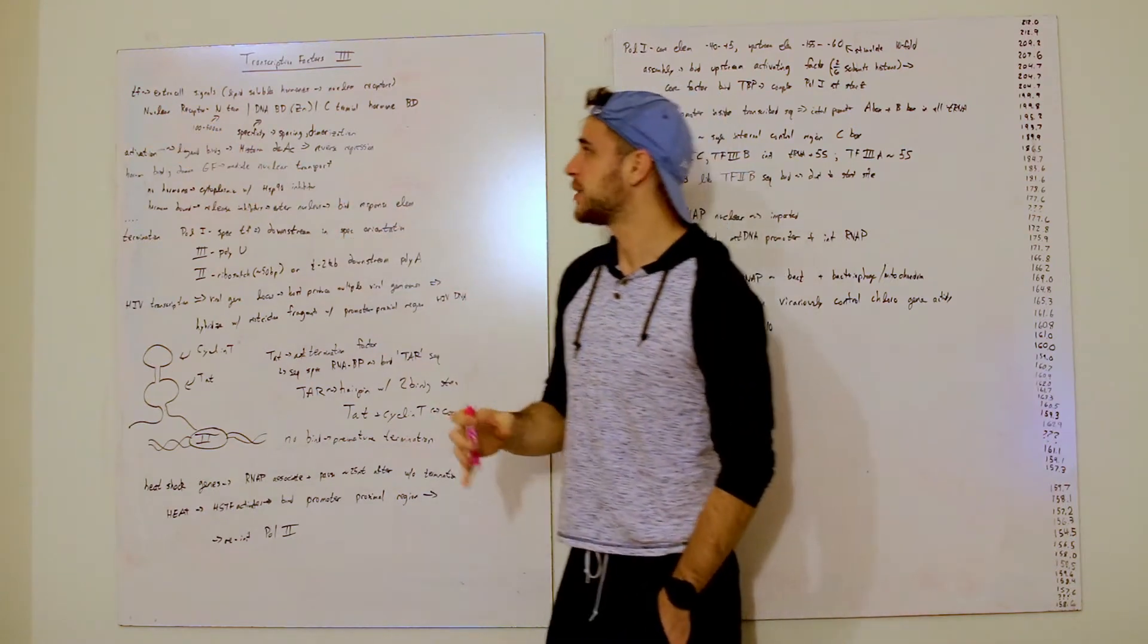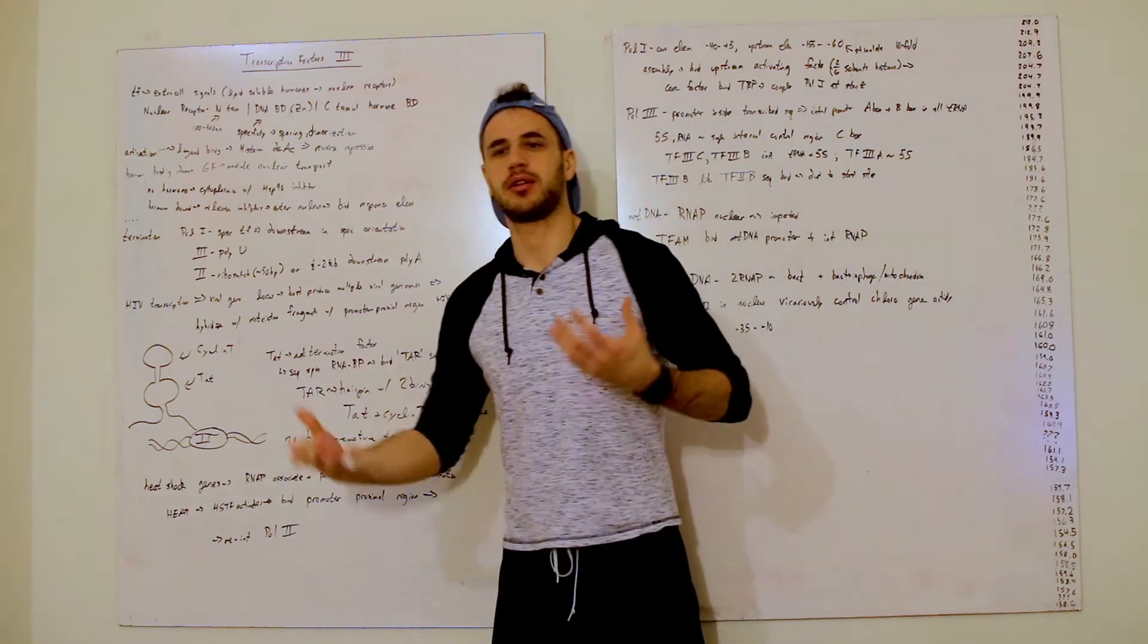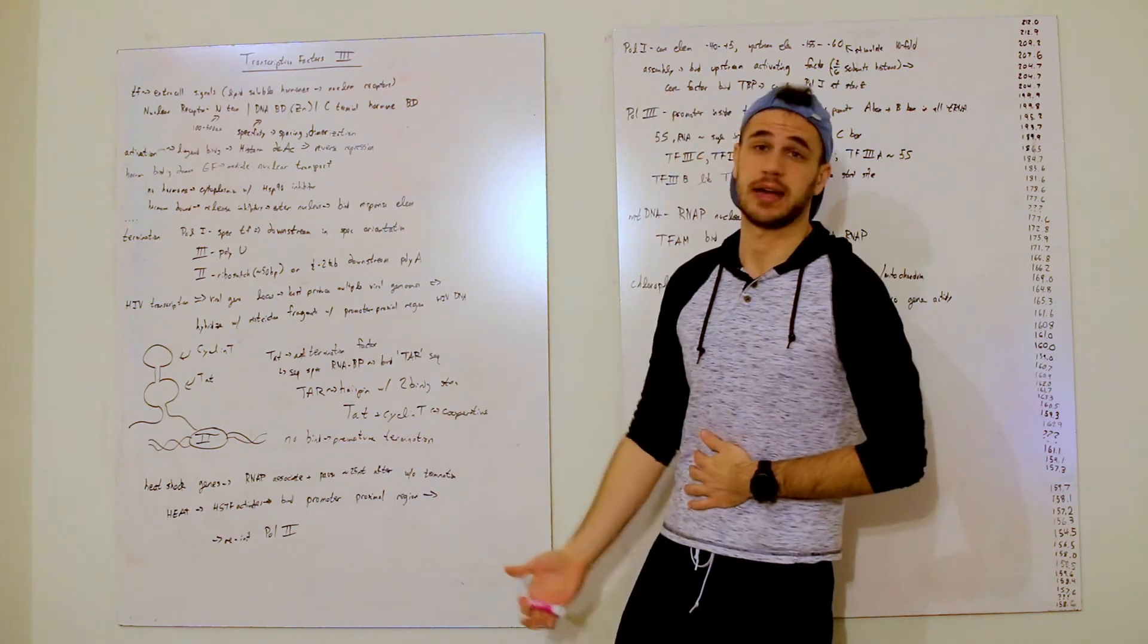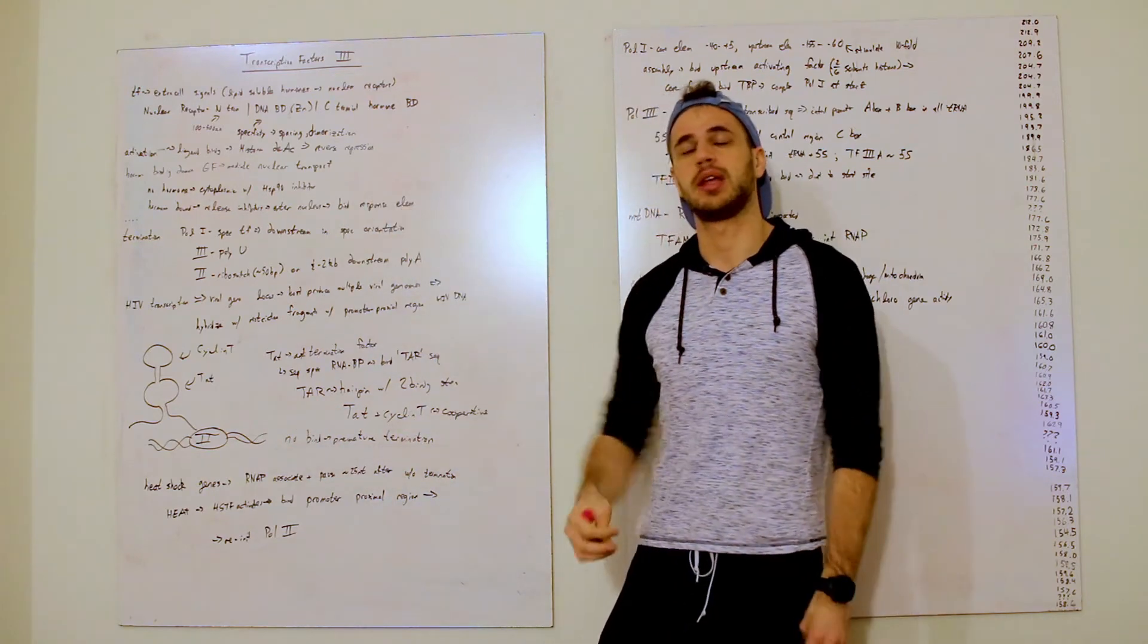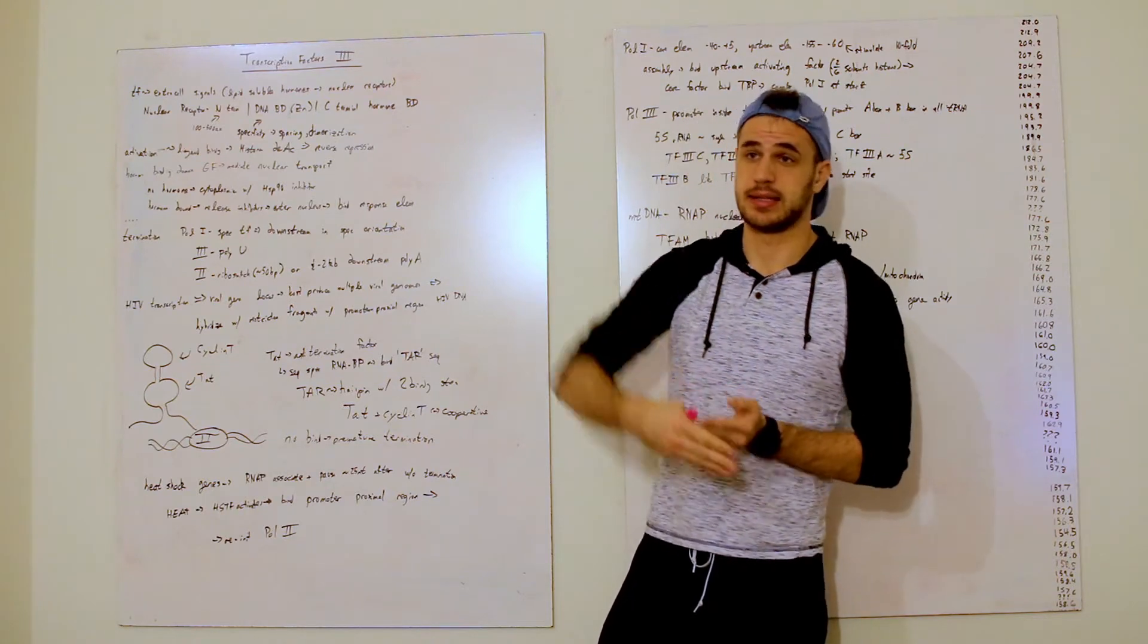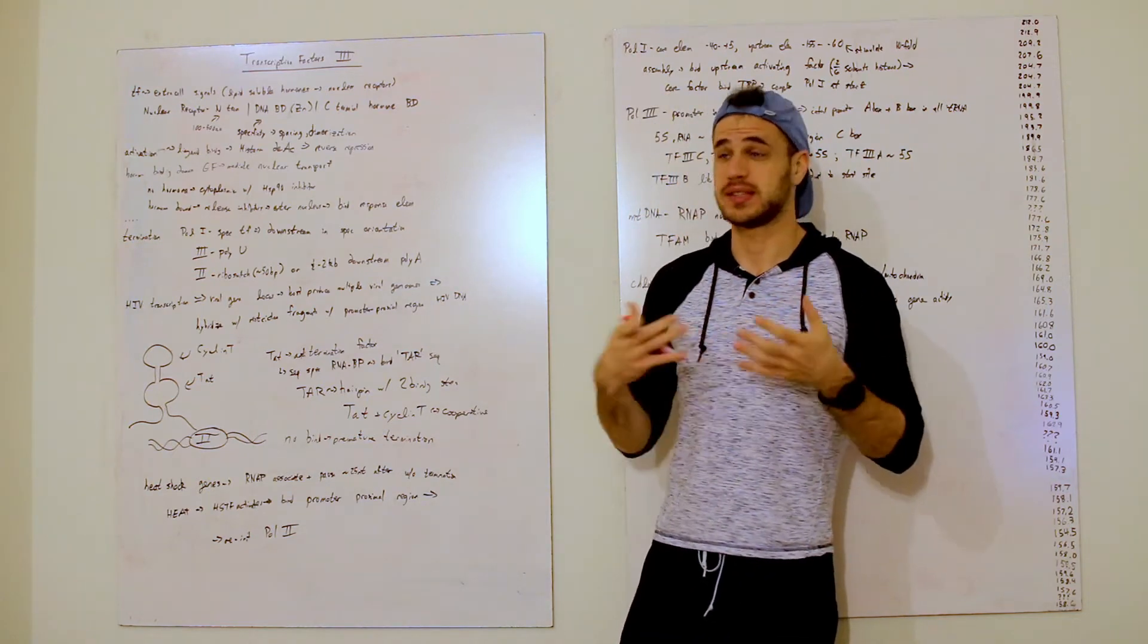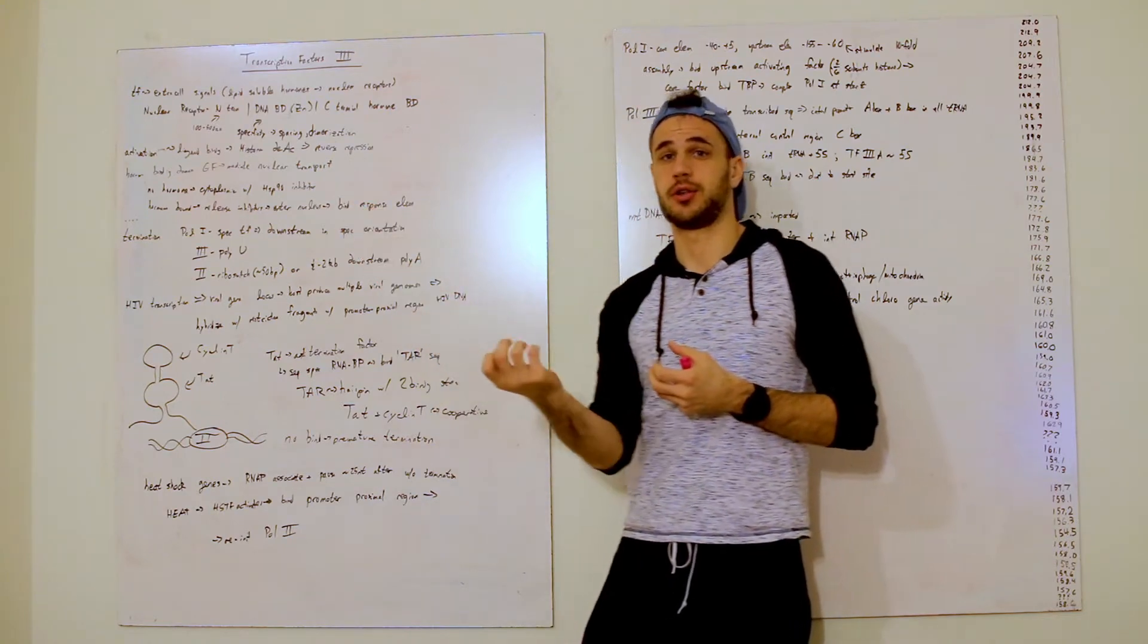It can be actually controlled by these things called external signals, and so these extracellular signals can be in the form of hormones, such as growth factors. Some of them can be actually lipid-soluble and seep on through the extracellular matrix and through the plasma membrane and into the cell. So now that these guys are inside the cell, they will then attach to these transcription factors that are freely floating within the cytosol. Within the cytosol, these guys will attach to the nuclear receptors.